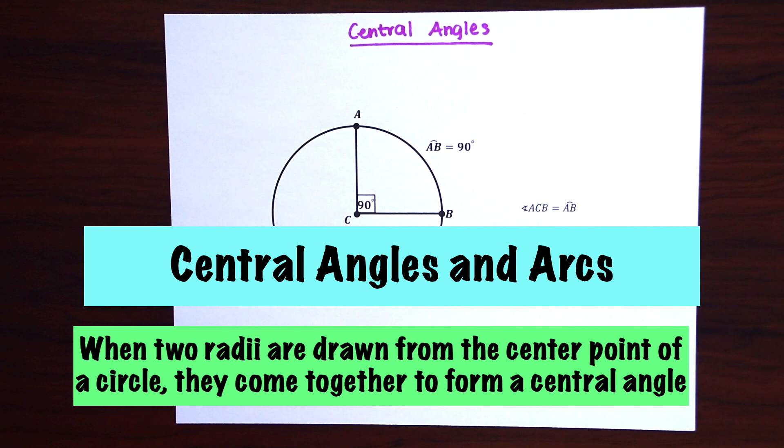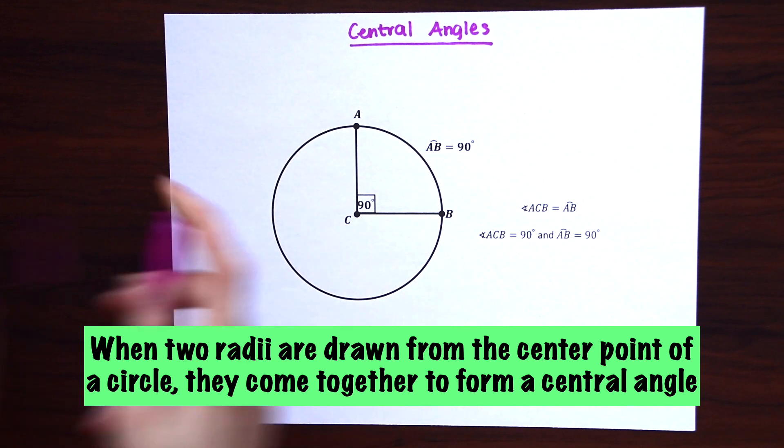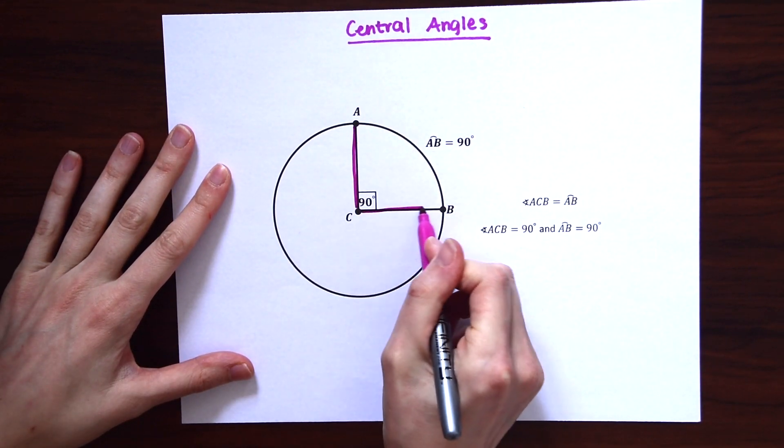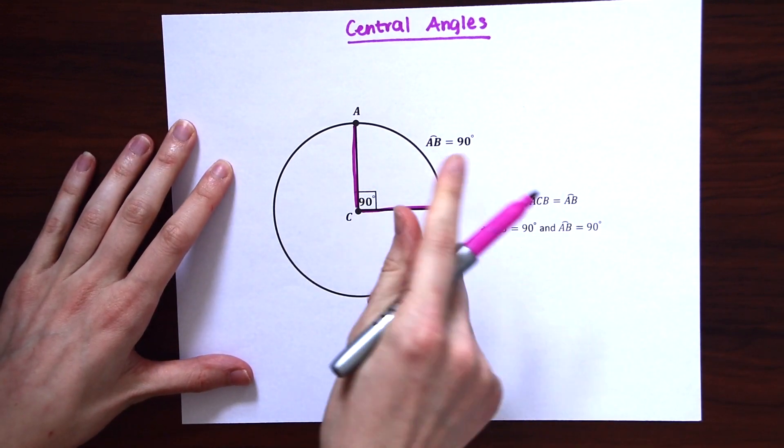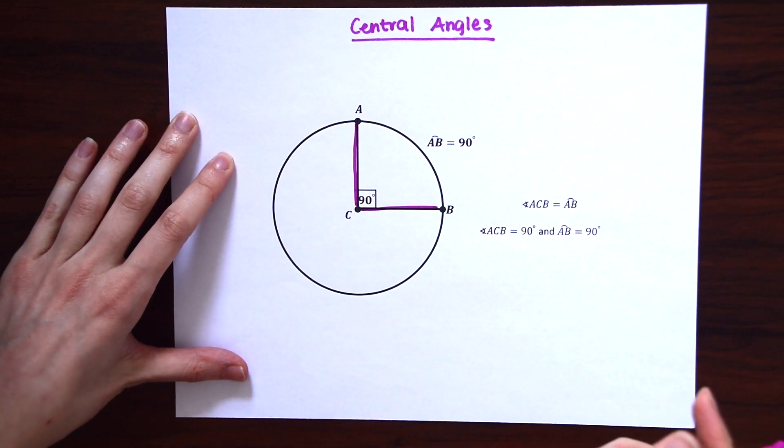So central angles and arcs form when two radii are drawn from the center point of a circle. And notice right here we have, I'll highlight them in pink, so this is our radius and this is another radius. And notice when they come together at this point they form this angle 90 degrees.